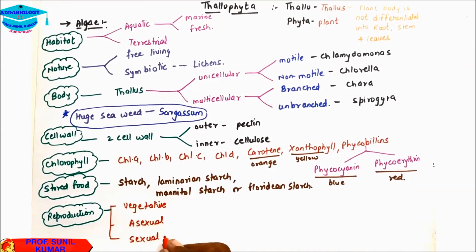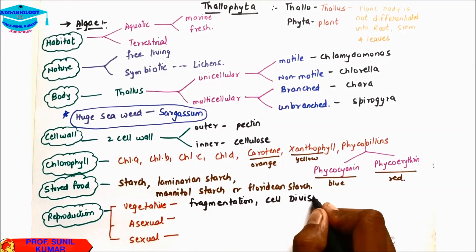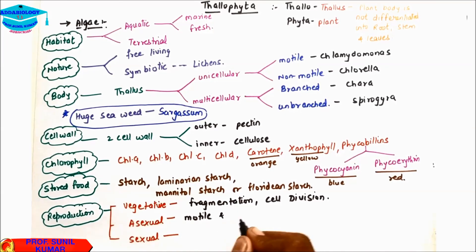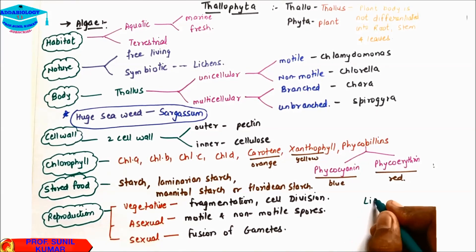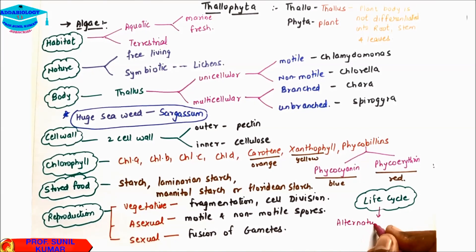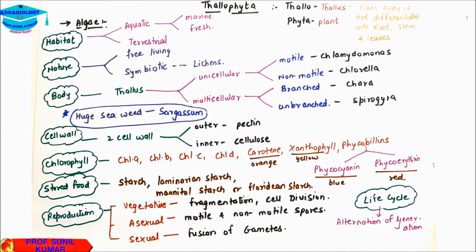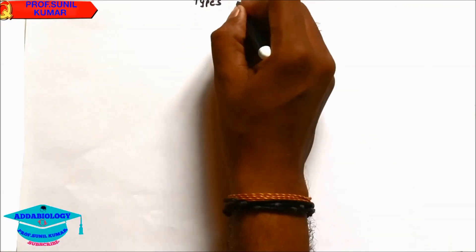Vegetative reproduction is either by fragmentation or cell division. Asexual reproduction is by motile or non-motile spores. Sexual reproduction takes place by fusion of gametes. The life cycle of algae shows alternation of generation — the haploid is the gametophytic phase (N) and the diploid is the sporophytic phase (2N). There are different types of algae.